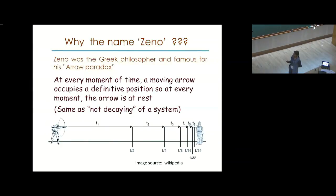Why the name Zeno? Zeno was the Greek philosopher and famous for his arrow paradox, which can be stated as: at every moment of time, a moving arrow occupies a definitive position. So at every moment, the arrow is at rest, same as not decaying of a system. So this arrow will never reach to this man because we are observing it for every interval of time.